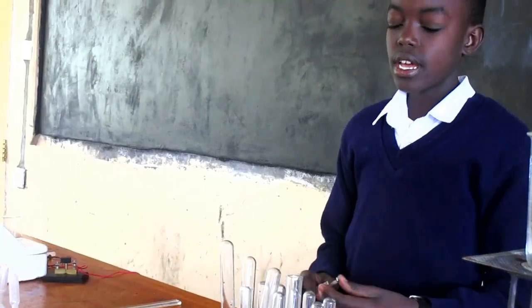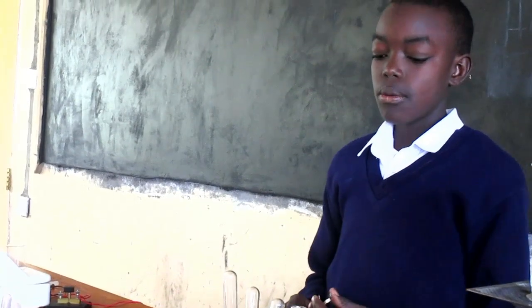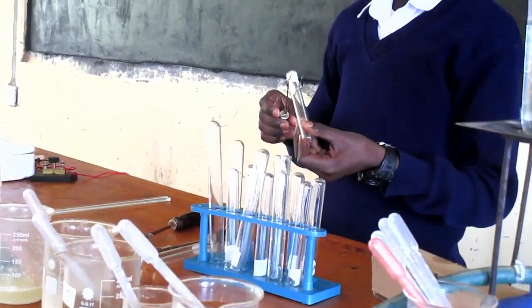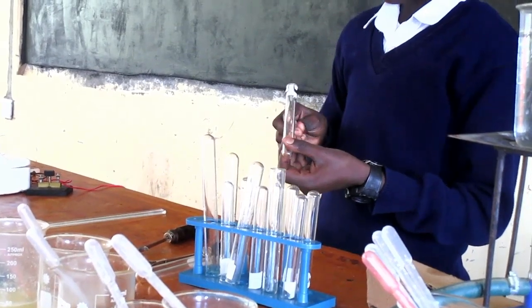My name is Ryan Vedasto, form 2 in Kissimilu Secondary School. In food tests, we are going to test if a food sample contains starch. First, we are going to take a test tube of sample B and put it in a test tube holder.